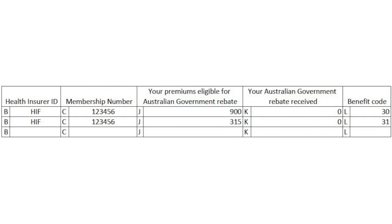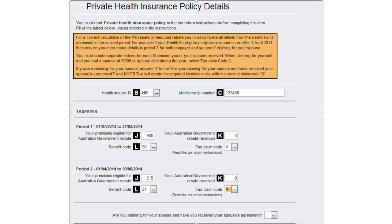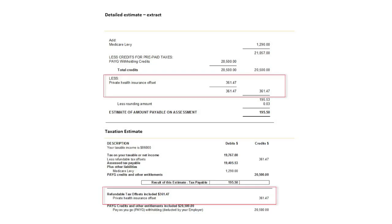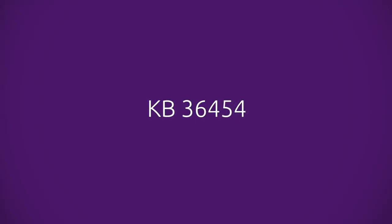Based on the above information, the statement will illustrate as follows. When you complete the worksheet and press F4 to generate the estimate, the extract of the estimate will show that the offset has been calculated for the year and is $361.40. For further examples and explanations on how this offset is calculated, you can visit our knowledge base and search article 36454.